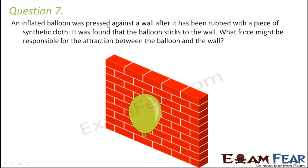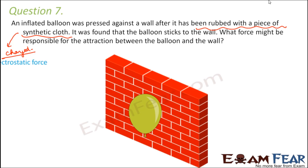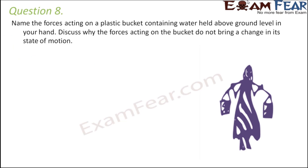Question number seven: an inflated balloon was pressed against a wall after it had been rubbed with a piece of synthetic cloth, and it was found that the balloon sticks to the wall. What force might be responsible for the attraction? When the balloon is rubbed with synthetic cloth, it gets charged. When a charged balloon comes near the wall it sticks to it. This involves the force between charged objects, which is nothing but electrostatic force. Whenever you deal with forces related to charges, it can be magnetic force or electrostatic force; here it is electrostatic force.